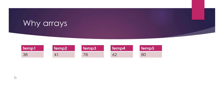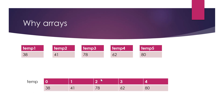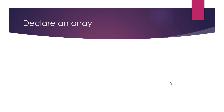Instead of creating five different variables, we create one collection with the variable name 'temp'. This collection holds all the values; each value has an index and is called an element. Indexing starts from zero up to length minus one, so for five temperatures the indices go from zero to four. That way we can iterate through values using a for loop, just like we did with strings.